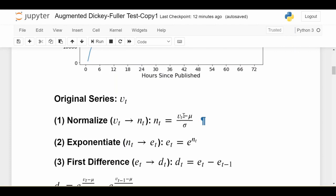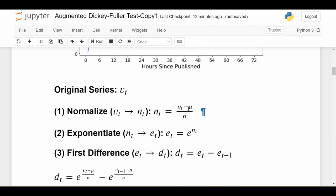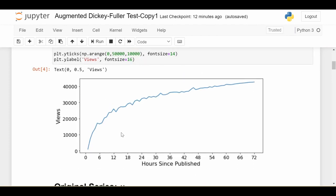We do V_t, which is our original time series, minus its mean and divided by its standard deviation. Just like a Z-score normalization, and that we'll call N_t. Now we're going to exponentiate N_t because this looks like a log curve.